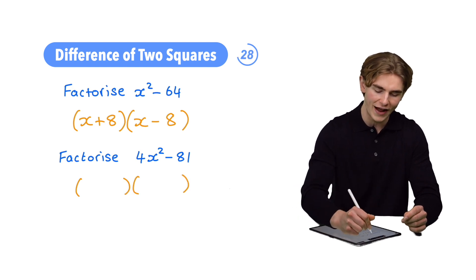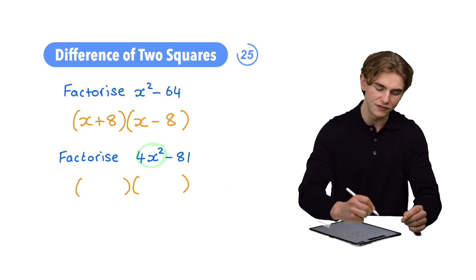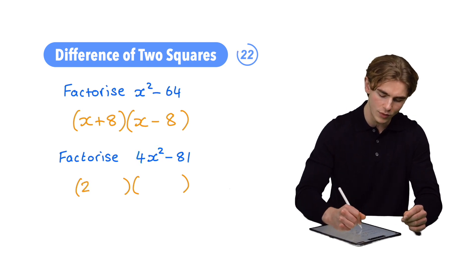At the start of our double brackets, we're going to have the square root of our first term. The square root of 4x squared is going to be 2x, so we're going to write that in.